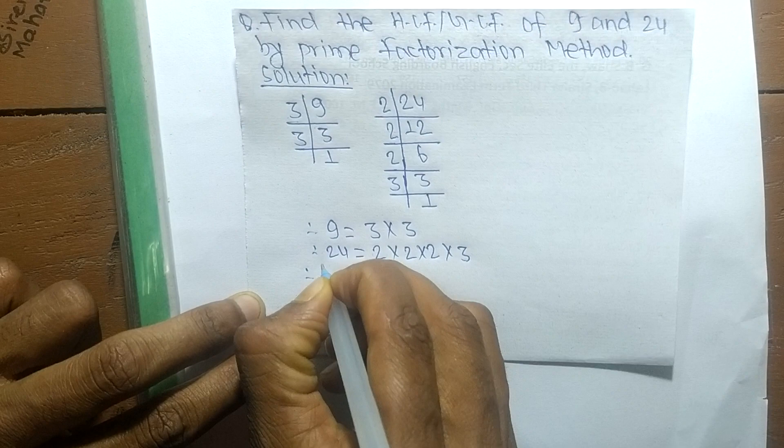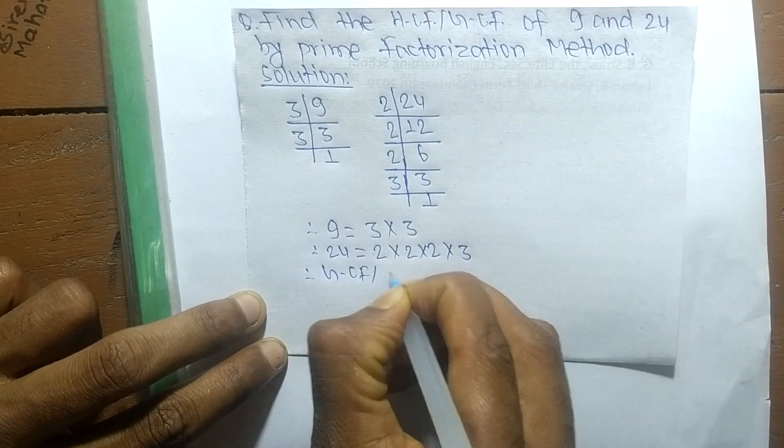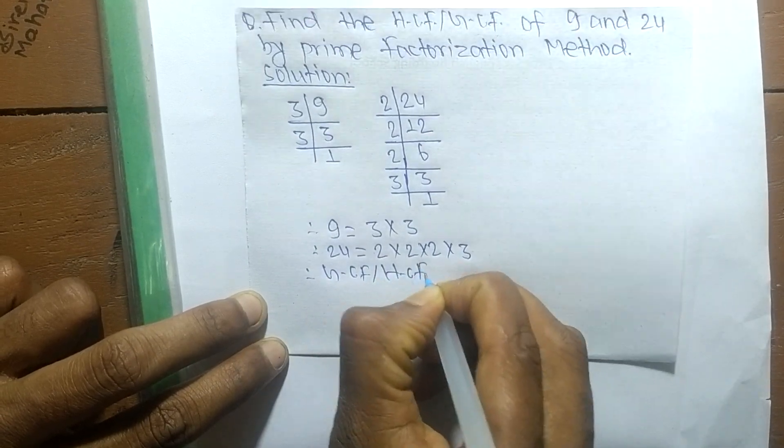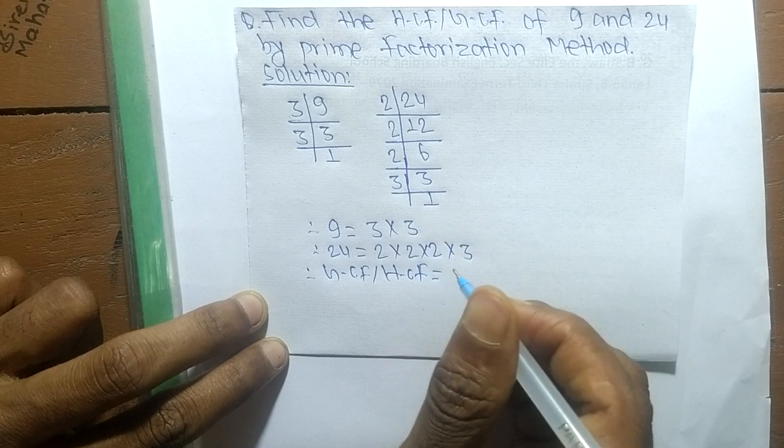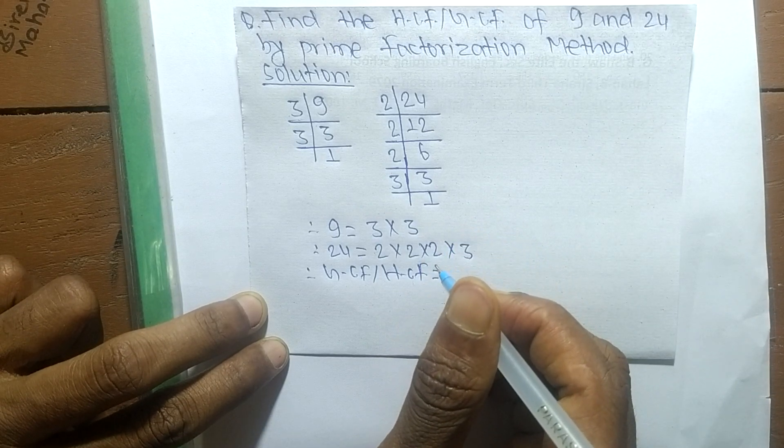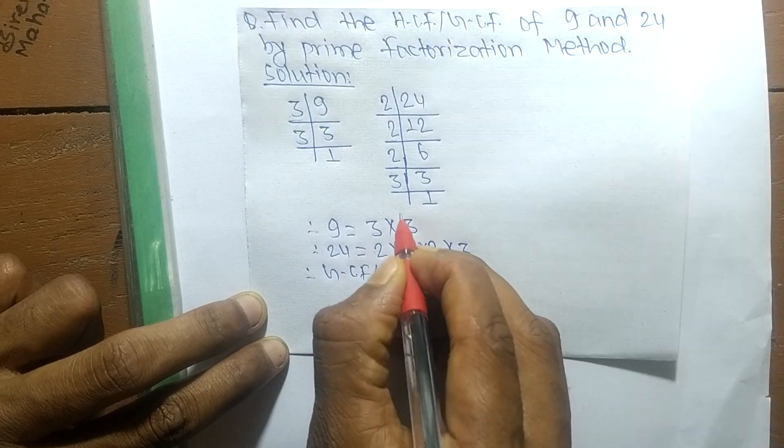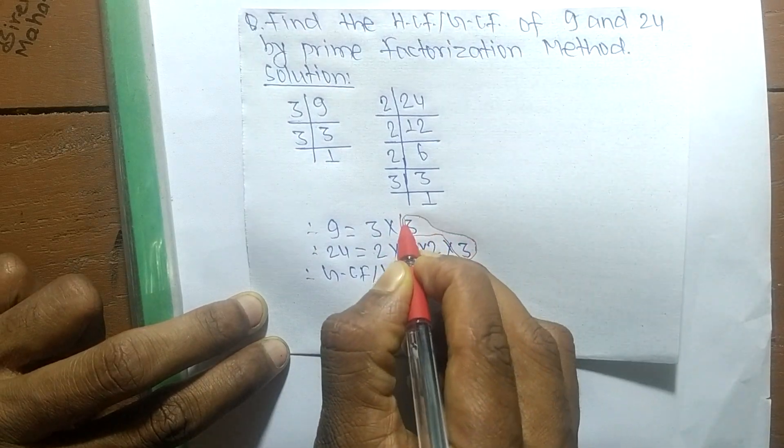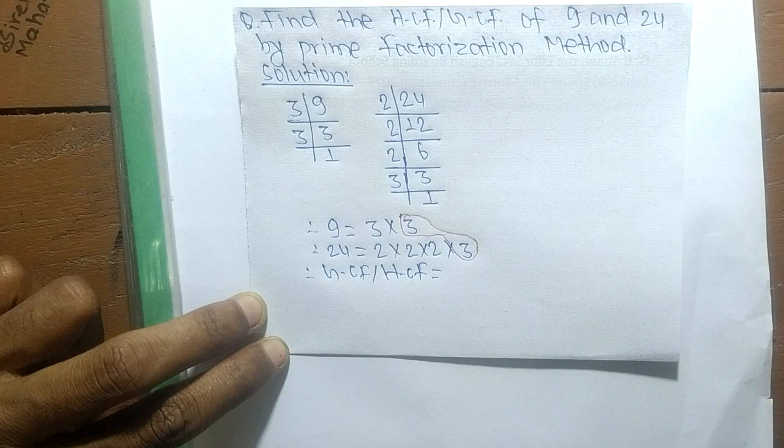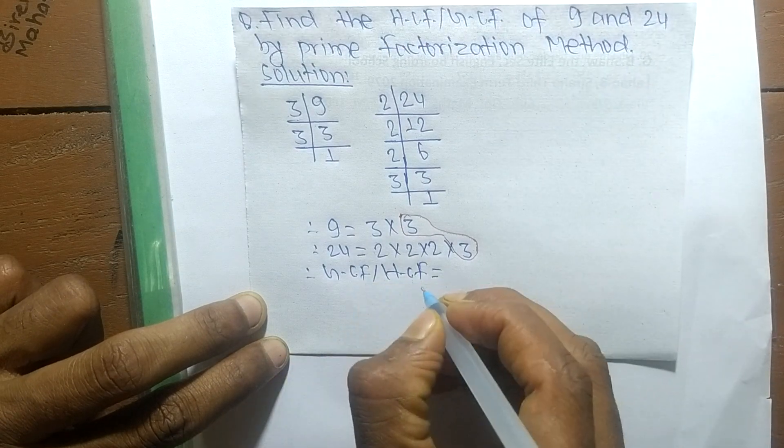And the GCF or HCF is the product of all the common factors. So common factors in both here is 3. So 3 is only common here, so GCF or HCF is equal to 3.